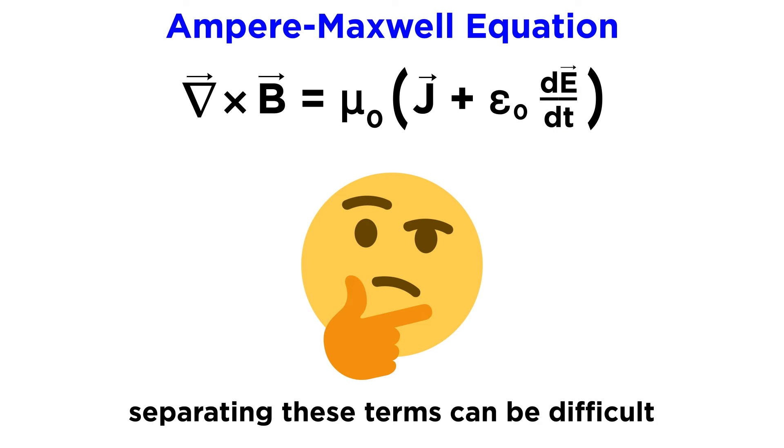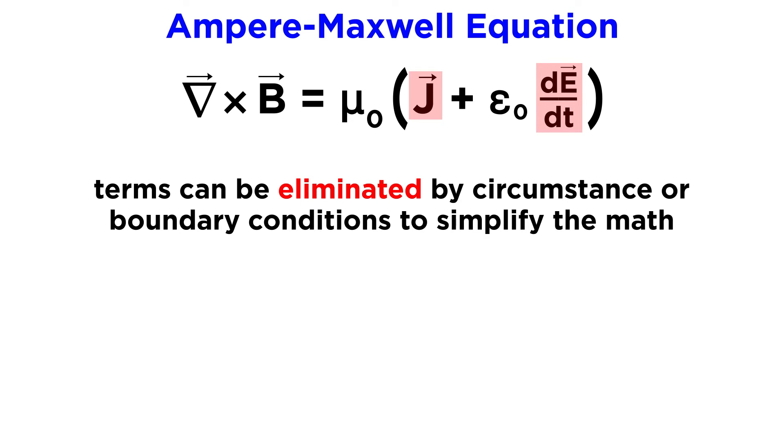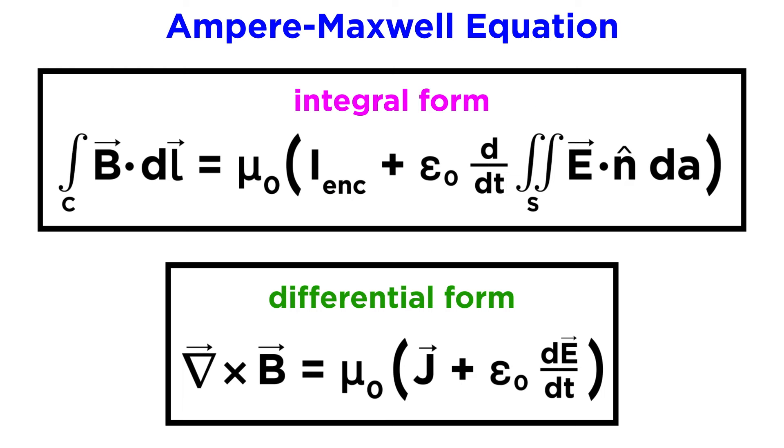These generally can't be determined from the curl at the same time, they have wildly different influences on the equation, and mathematically separating them is often impossible. However, one element of the right side is usually purposefully eliminated from consideration by circumstance or boundary conditions to make things simpler mathematically. Note the differences between the integral form and the differential form's terms. The current density is listed, rather than the total enclosed current. The electric field is directly referenced as a changing electric field, rather than the indirect total flux through a surface.